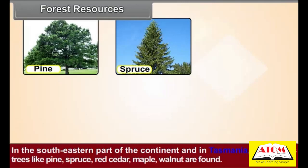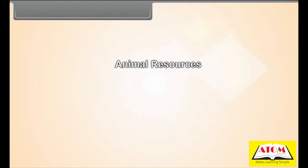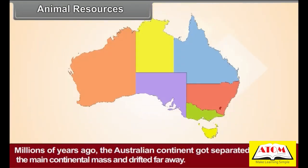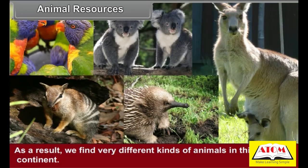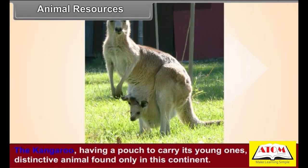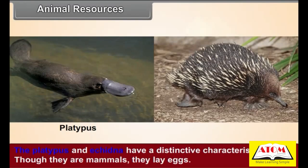Trees like pine, spruce, red cedar, maple, and walnut are found in this region. Millions of years ago, the Australian continent got separated from the main continental mass and drifted far away. As a result, we find very different kinds of animals in this continent. The kangaroo, having a pouch to carry its young ones, is a distinctive animal found only in this continent. Kangaroos feed on shrubs and grasses.